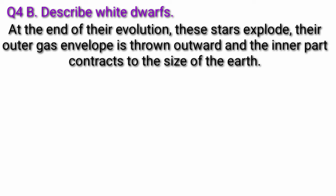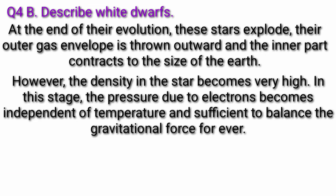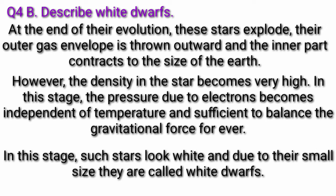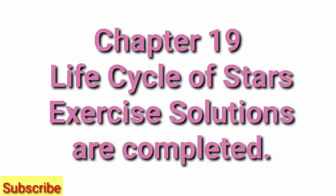Their outer gas envelope is thrown outward and the inner part contracts to the size of the earth. However, the density in the star becomes very high. In this stage, the pressure due to electrons becomes independent of temperature and sufficient to balance the gravitational force forever. In this stage, such stars look white and due to their small size, they are called white dwarfs. Our Chapter 19 Life Cycle of Stars Exercise Solutions are completed.